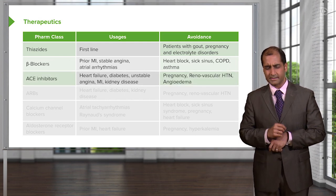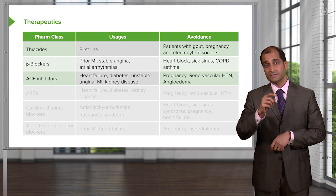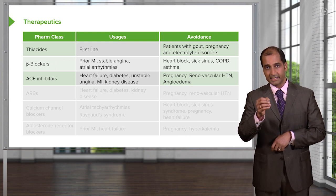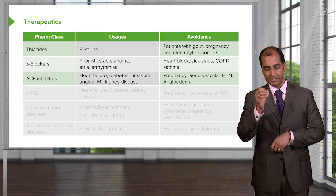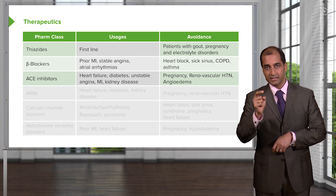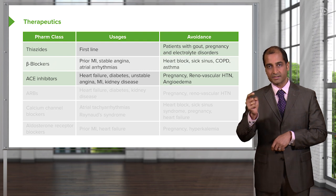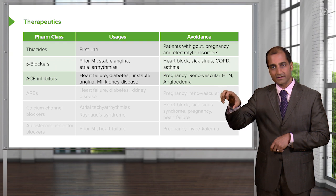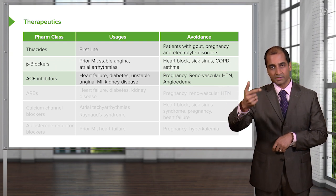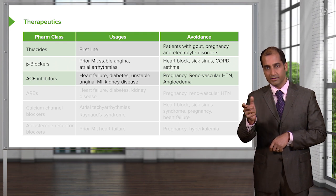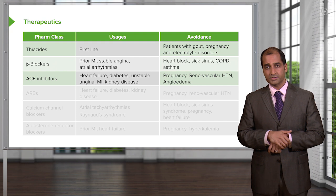ACE inhibitors: if your patient has diabetes mellitus, ACE inhibitors would be a good choice. ACE inhibitors would be contraindicated — we talked about this — with atherosclerosis. The body requires angiotensin II to preferentially work on the efferent arteriole. You constrict it to restore GFR, so giving an ACE inhibitor will only exacerbate it.